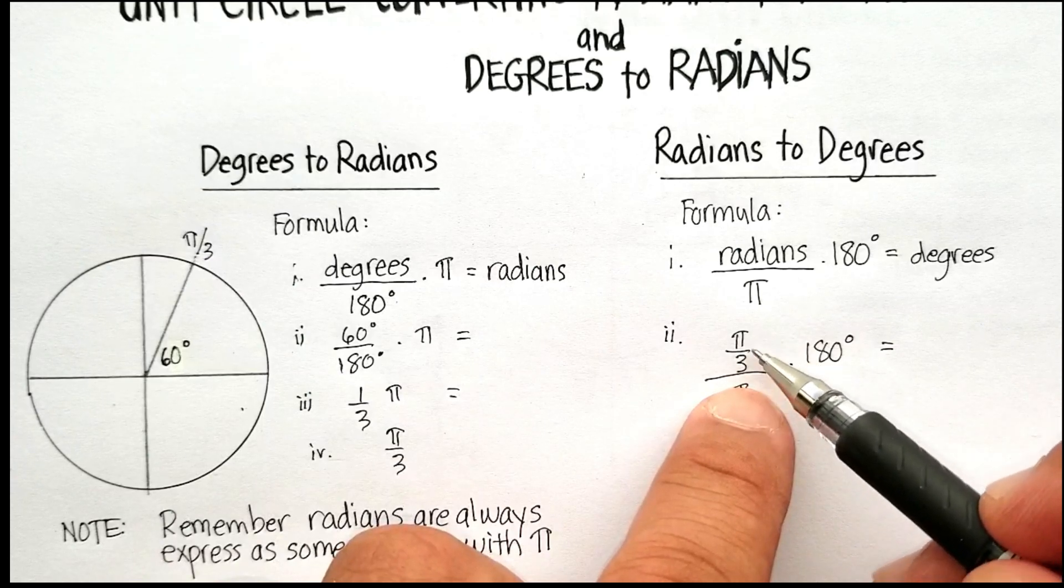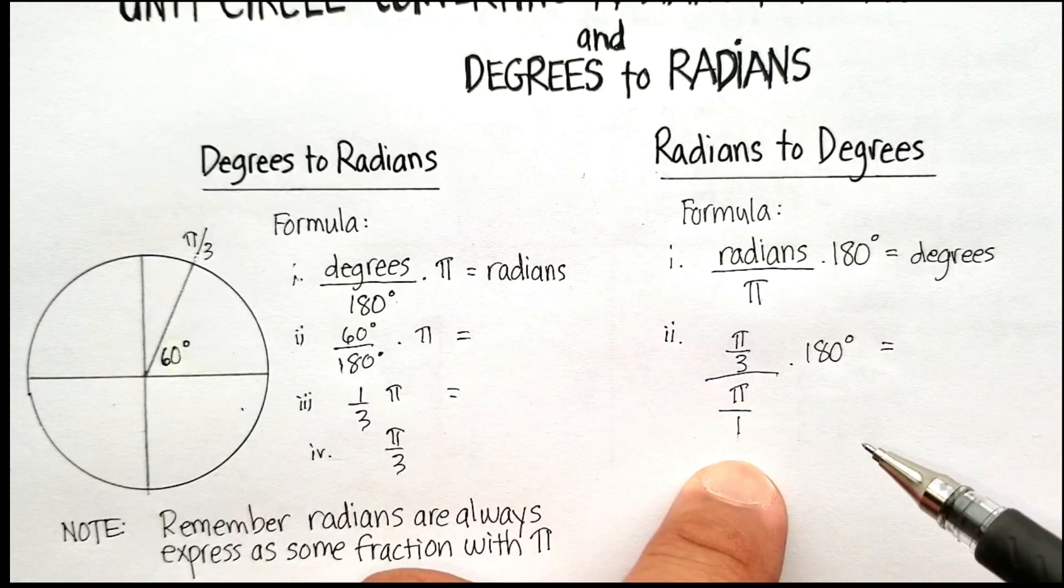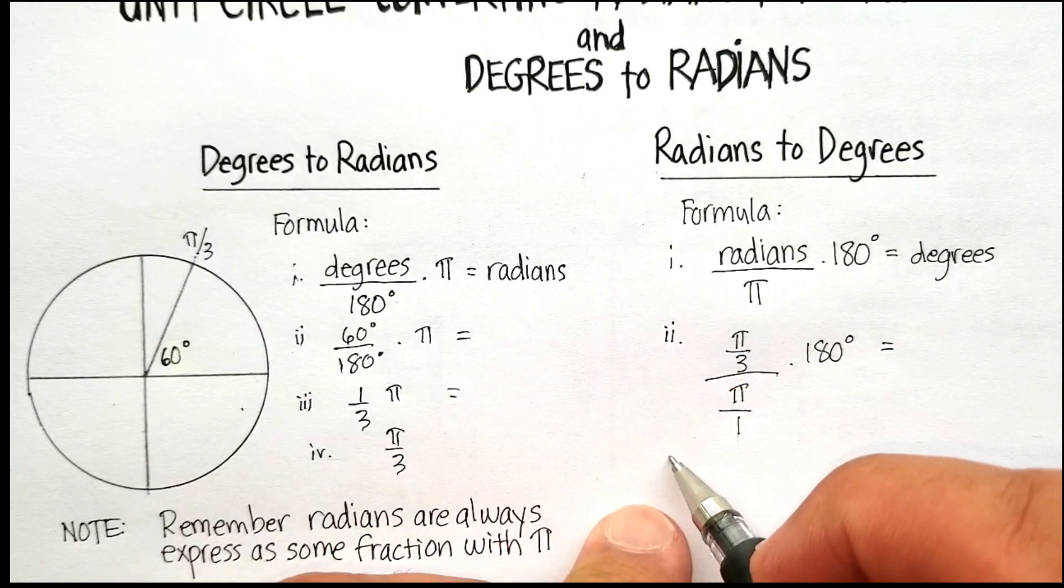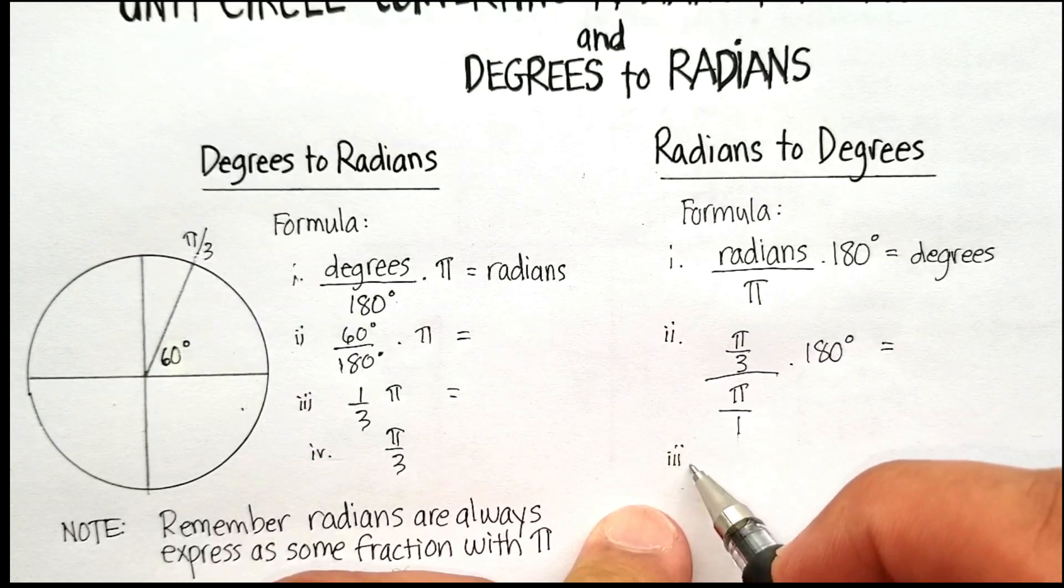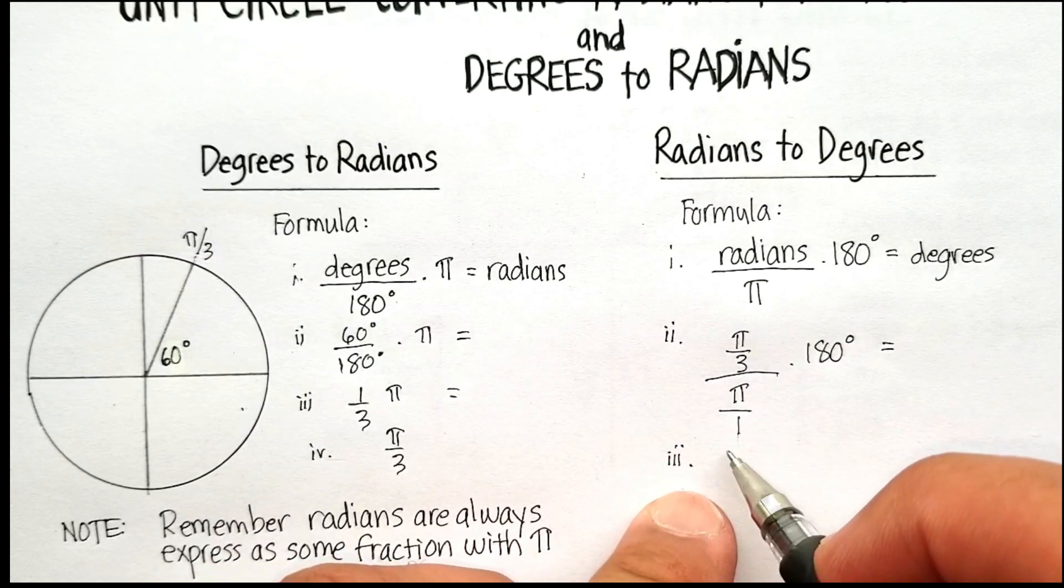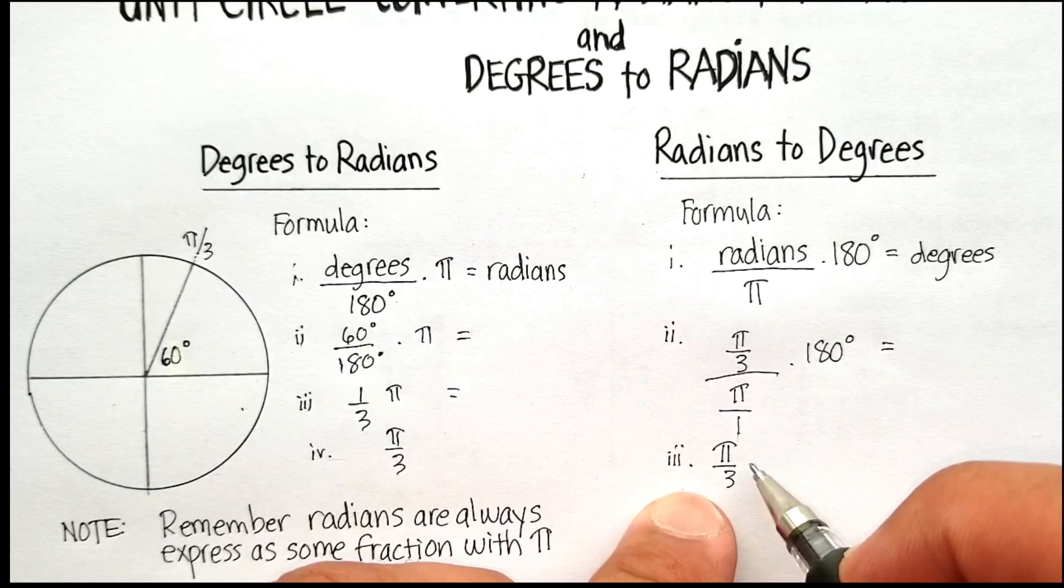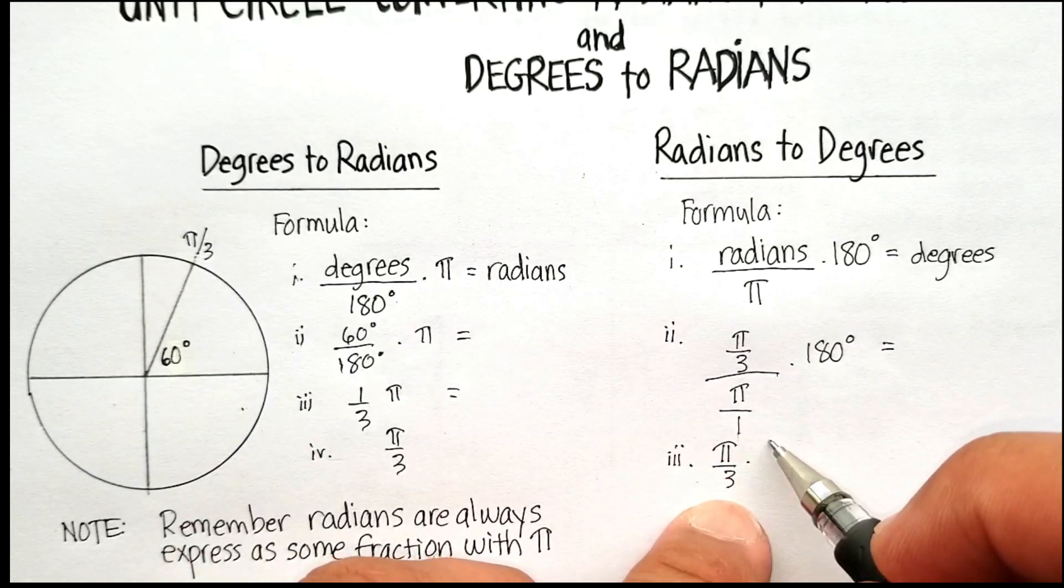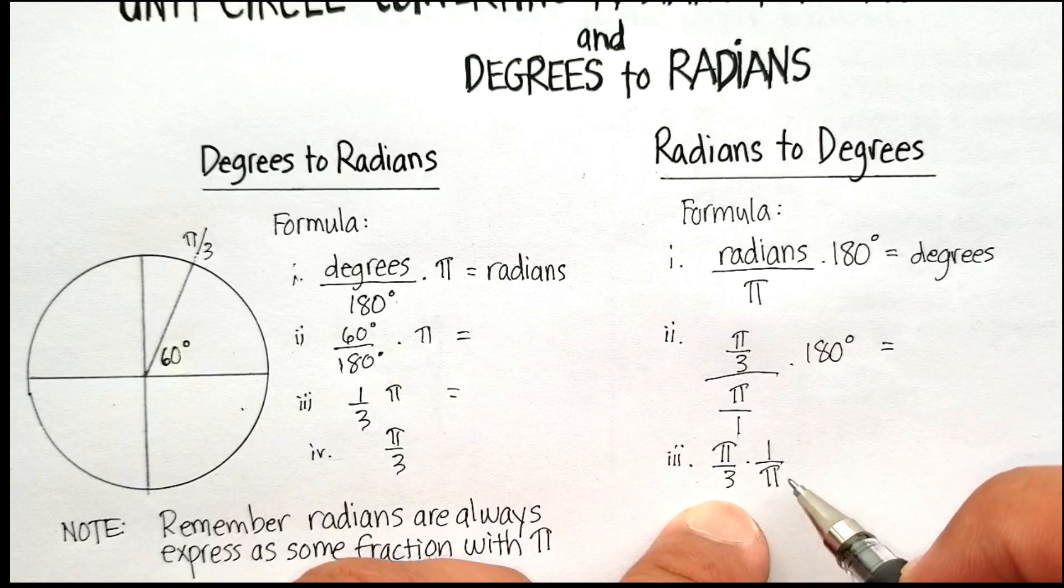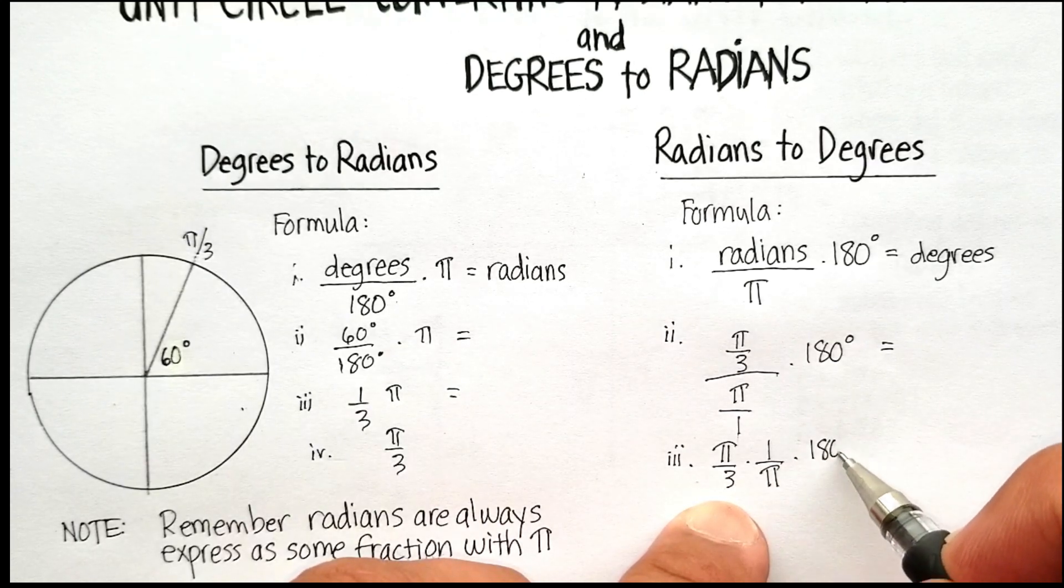So essentially what I have is a fraction divided by a fraction. And if you remember your algebra, when you divide a fraction by a fraction, you're really just multiplying by the reciprocal of this. So I'm just going to put 1 over pi.